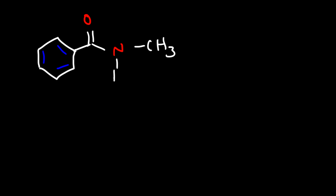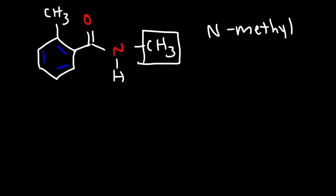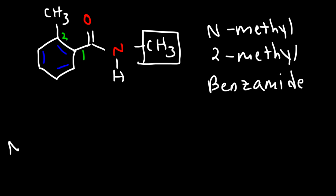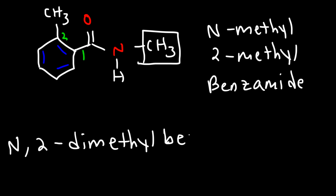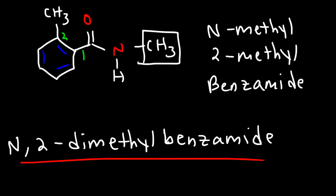We're going to have a benzene ring with an amide functional group, but this time we have a methyl on the nitrogen and a methyl on the benzene ring. Because we have a methyl on the nitrogen, that's N-methyl. The amide is at carbon one, so the ring methyl is at carbon two — that's a 2-methyl group. When you have a benzene ring with an amide the parent name is benzamide, so putting it together: N,2-dimethylbenzamide.